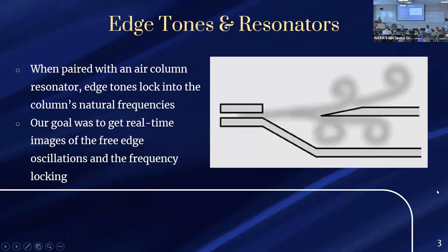When you pair an edge tone — a free edge — with an air column, the original free-floating edge is now paired with a column that extends in length. The edge tone's natural frequencies lock into the natural frequencies of the column dependent on its length. The overarching goal of my research was to get real-time images of the natural frequencies of a free edge, and also this frequency locking that occurs when you add a column.